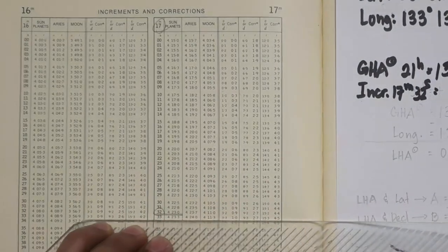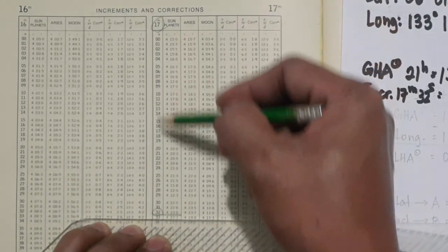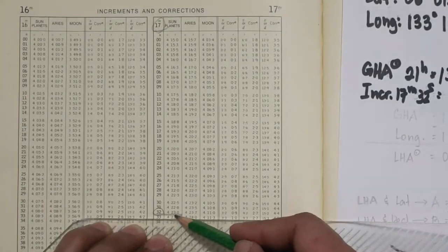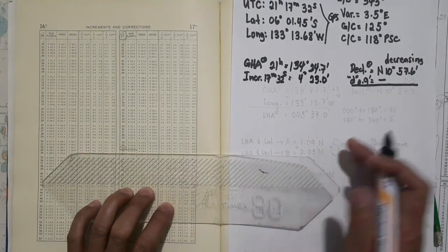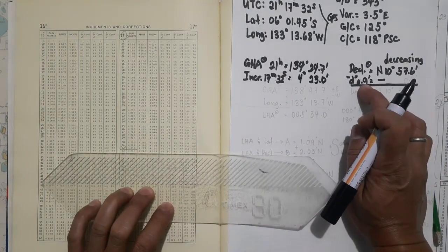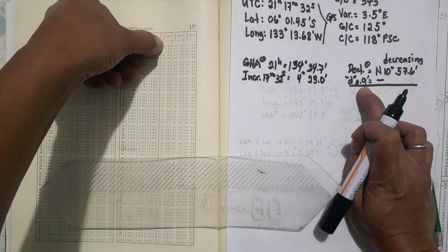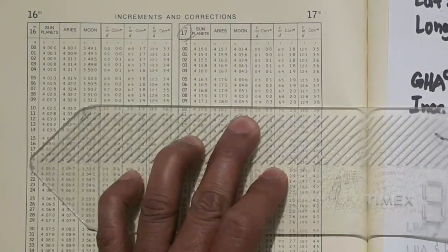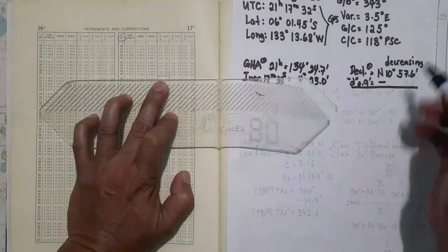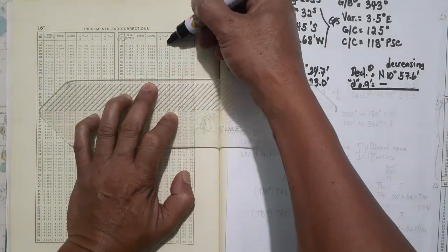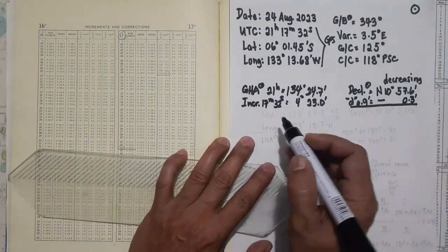Next we find our d-correction of 0.9. In the V or D correction columns, we find 0.9 on the first column, and the corresponding correction is 0.3 minutes. So we write 0.3 minutes under the minutes column. Now let's apply these to the GHA of the sun — we always add the increments.